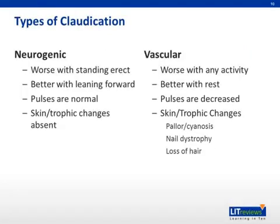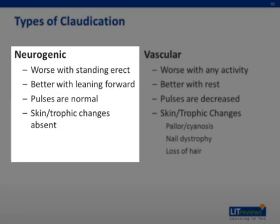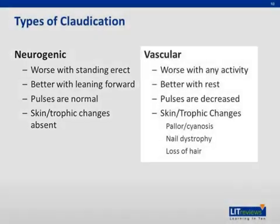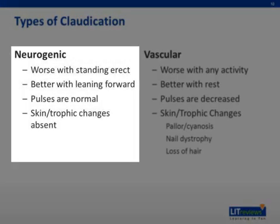It is important to be able to distinguish between neurogenic and vascular claudication based on your history. Neurogenic claudication is worse with any activity that causes straightening of the spinal canal — standing erect and walking down an incline. Conversely, any activity that causes the patient to bend forward and therefore open up the spinal canal will alleviate neurogenic symptoms, such as pushing a shopping cart. Vascular claudication is classically made worse by activity and relieved with brief periods of rest.